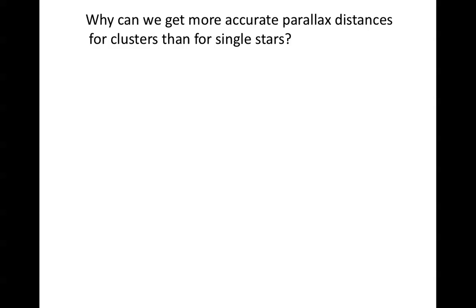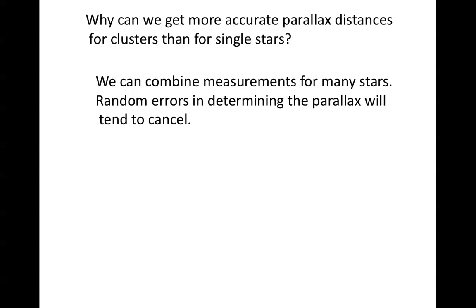The best parallax distances come from clusters of objects rather than single stars, because combining measurements for many stars causes random errors to cancel, yielding a more accurate average. Parallax works out to at most about the distance of the Orion Nebula. Even within our own galaxy we need other methods for measuring distances across it. When we get to galaxies outside our own, parallax measurements become utterly impossible, and we must rely on other means entirely.